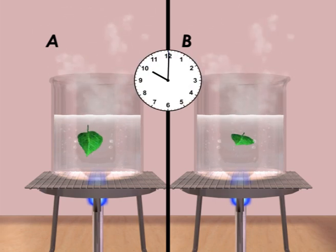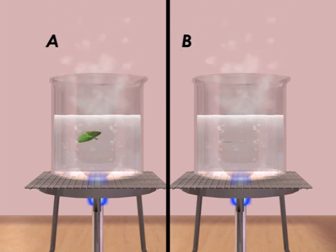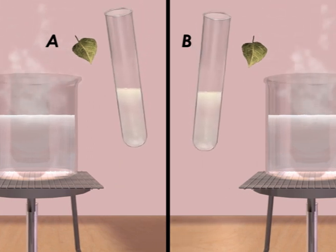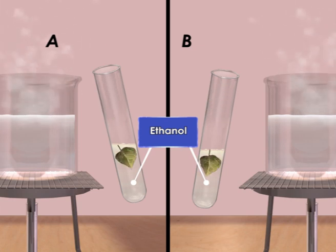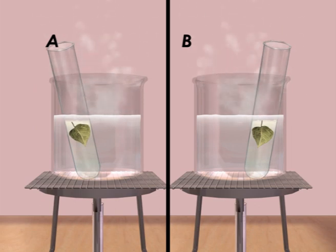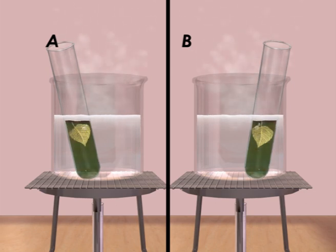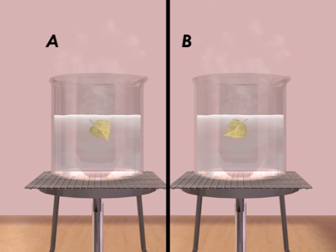Immerse both leaves in boiling water for five minutes to break down the cell walls of the leaves. Then transfer the leaves into test tubes containing ethanol and place them in the hot water to get rid of the chlorophyll in the leaves. Once the leaves are decolorized, remove both leaves and put them into warm water to soften the leaves and remove the alcohol content. Remove the leaves and spread them onto a white tile.